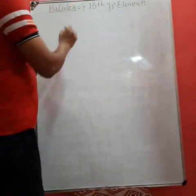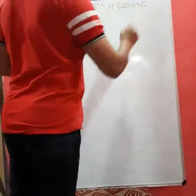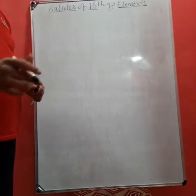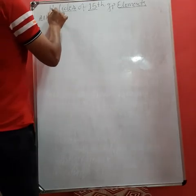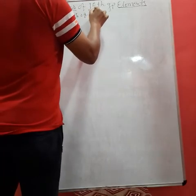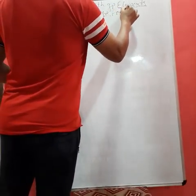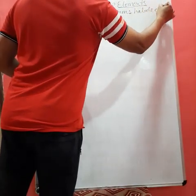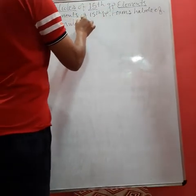Next content is halides of 15th group elements, that is the reaction of 15th group elements with the halogen. All elements of 15th group form halides of formula. Now, can you tell me what will be the formula?